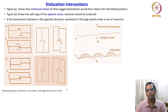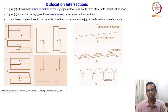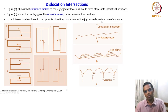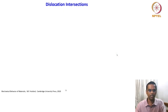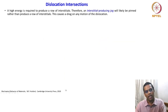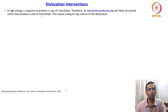There will be a drag — considering line tension and all this — this is how the dislocation moves. It will produce vacancies as it moves. If the intersection had been in the opposite direction, movement of jogs would create a row of vacancies. But this is not going to happen easily because energy consideration shows that high energy is required to produce a row of interstitials. Therefore, an interstitial-producing jog will likely be pinned rather than produce a row of interstitials.